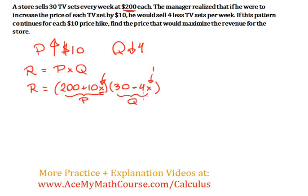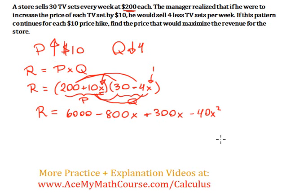Now what do we need to do? I want to expand the revenue function here, and then we actually want to optimize, we want to find the maximum value for the revenue. So let's expand this. I'm going to just FOIL. 200 times 30 is 6000 minus, why is it minus? Well, 200 times negative 4x is negative 800x, then 10x times 30 is 300x, and 10x times negative 4x is negative 40x squared.